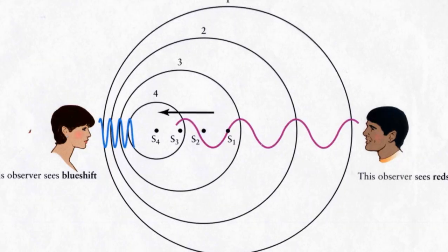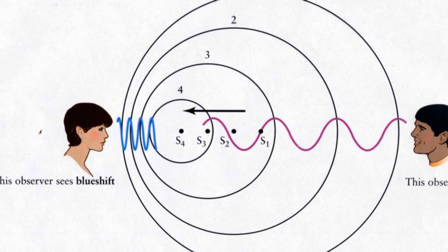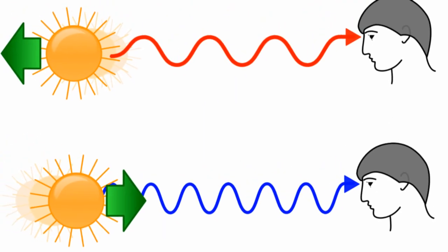Like sound, light also travels in waves. If a source of light is traveling toward you, its wavelengths are compressed, resulting in a lower wavelength, which means that the light looks bluer. We call this blue shift.